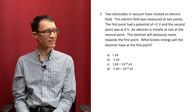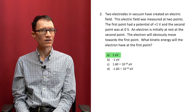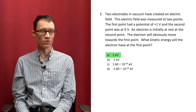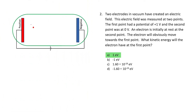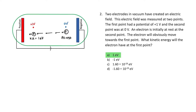The correct answer is A, 1 electron volt. The electron started from rest, so it definitely had to gain kinetic energy. And because the electron passed through a 1 volt potential, it gained exactly 1 electron volt of energy. Negative kinetic energy doesn't make any sense, so negative 1 electron volt is the incorrect answer in this case.